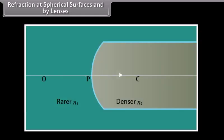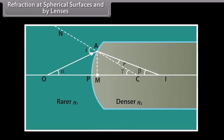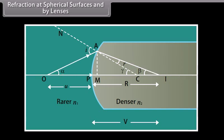Refraction at spherical surfaces and by lenses. Refraction at a spherical surface. The figure shown shows a convex refracting surface separating two media. Let P be the pole and C the center of curvature of the refracting surface. Let N1 and N2 be the refractive indices of rarer and denser media respectively. Let O be a luminous point object on the principal axis of the convex refracting surface. An incident ray OA after refraction at point A bends towards the normal NAC and goes along AI. Another ray OP falls normally on the surface and proceeds undeviated. The two refracted rays meet at I, which is the real image of point object O.